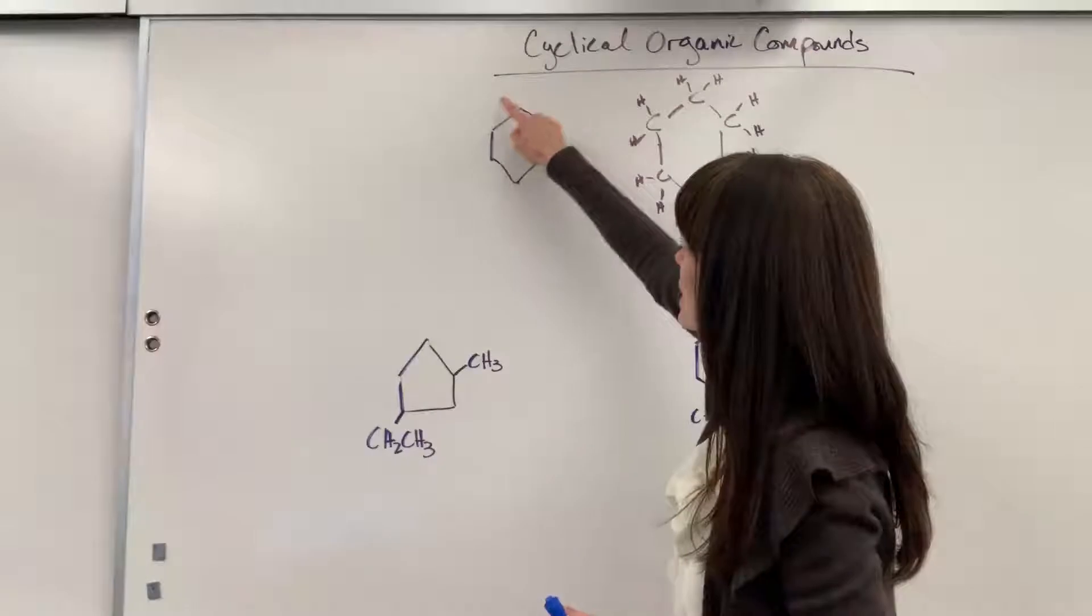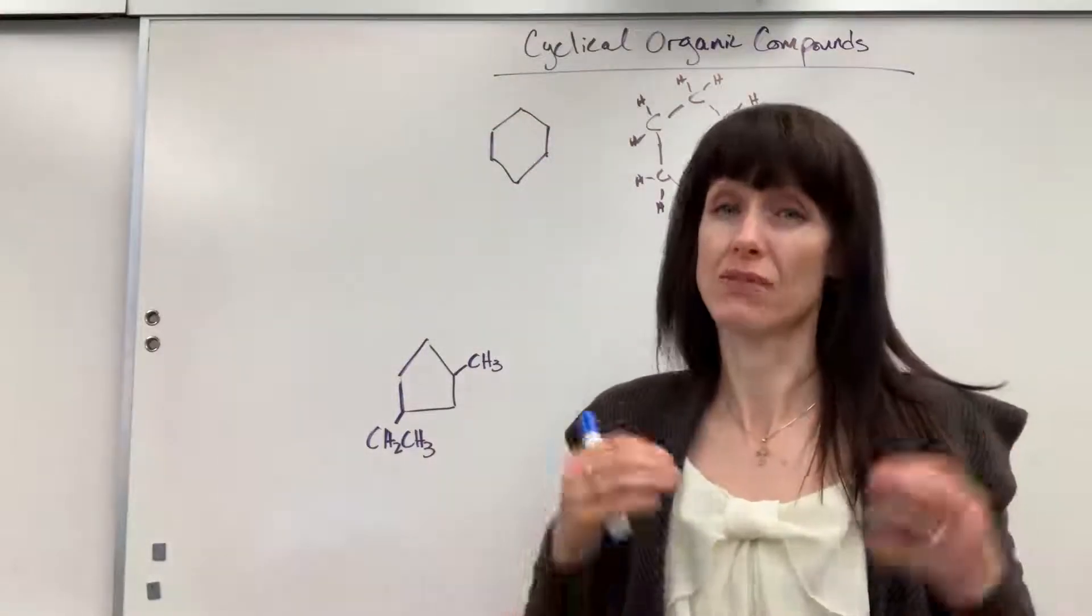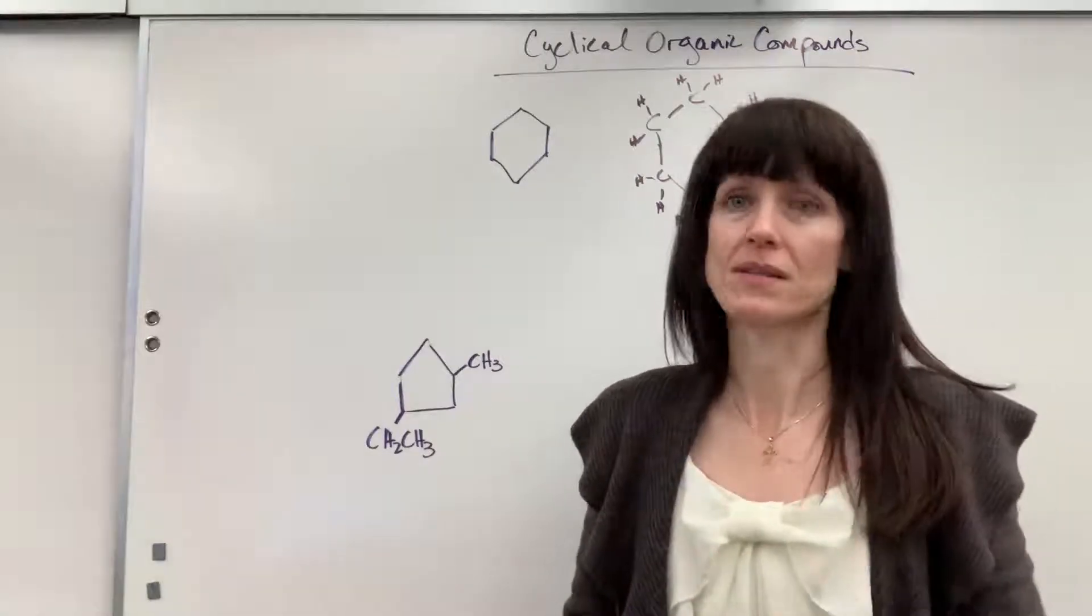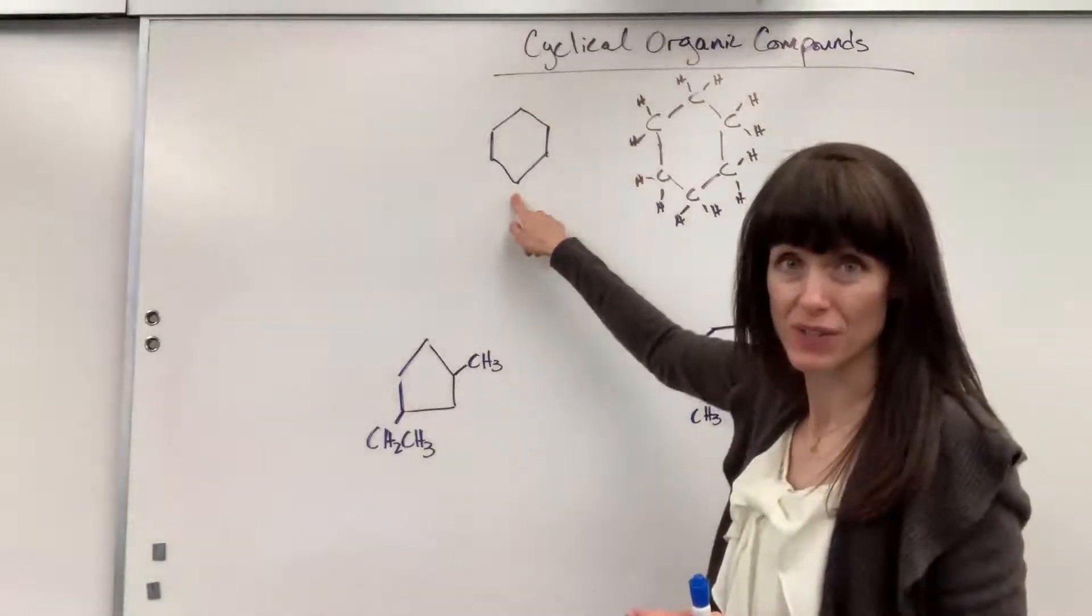Each vertex is a carbon and it's understood that each carbon has enough hydrogens to give a total of four bonds. So notice I've got one, two, three, four, five, six points, six vertices.